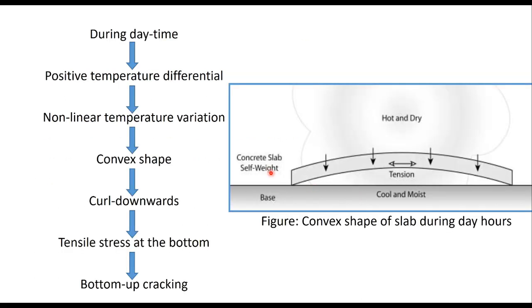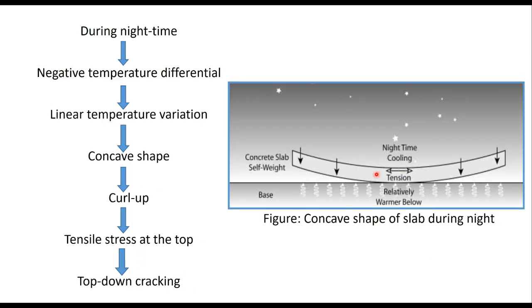Pavement temperature differential is positive when the top surface is hotter than the bottom, which happens during daytime. This non-linear gradient creates bending or curling downward, generating tensile stresses at the bottom of the slab; cracks may initiate at the bottom and propagate upward — this is called bottom-up cracking. During nighttime there is a negative temperature differential, which is taken as linear. The slab takes a concave shape curling upward, and tensile stress develops at the top. When a wheel load comes onto this pavement, the tensile stress at the top can cause a crack that propagates downward — top-down cracking.